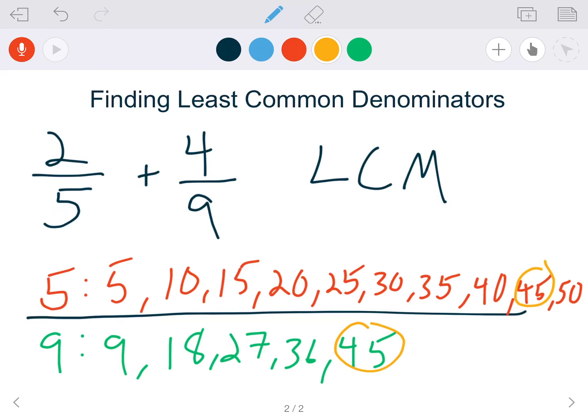9 also has a multiple of 45. I don't believe 9, 18, 27, or 36 - I don't believe any of those are multiples of 5 by checking these numbers right here. But the first common multiple or the least common multiple between the two is 45.